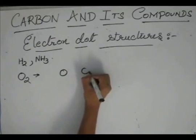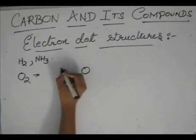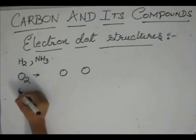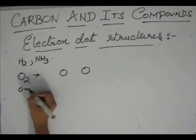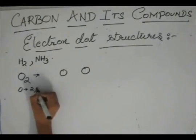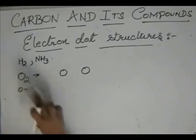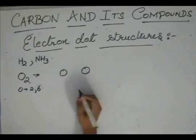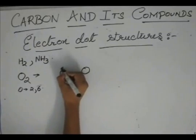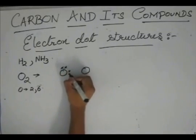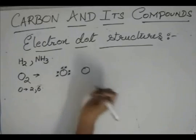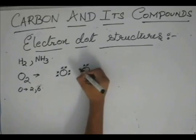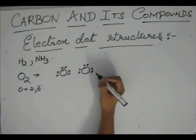And oxygen has an electronic configuration of two, six. One, two, three, four, five, six. One, two, three, four, five, six.